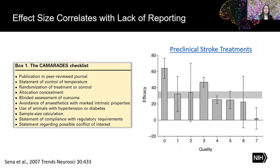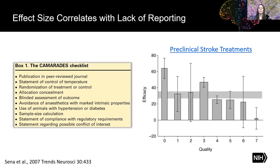Why is not reporting these items such a problem? In a meta-analysis of two dozen preclinical stroke papers, the authors counted how many rigorous experimental design elements — including blinding, randomization, sample size estimation, and various controls — were reported. They found that an increase in the number of reported quality elements correlated with a decrease in the effect size, and none of the papers even came close to reporting all 10 quality elements. This adds support to earlier studies suggesting that a lack of reporting, just like low power, is associated with inflated effect sizes — and this may be due to a lack of practice, meaning these strategies were probably not even performed.